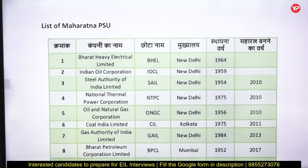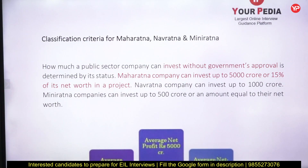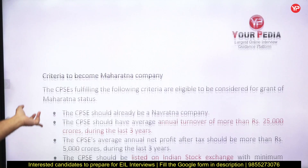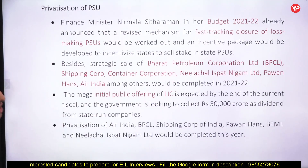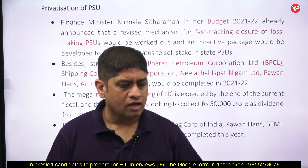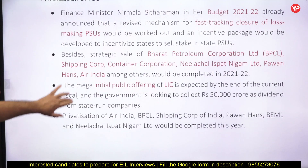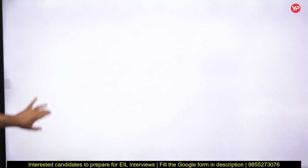When it comes to categorization of public sector companies, Maharatna is at the top. You should know what Maharatna companies exist and the criteria for classification into Maharatna, Navaratna, and Miniratna. EIL is a Navaratna company. For PSU interviews, one common question is about privatization — do you think PSUs should be privatized? The answer is: if it is profit-making, privatization should not be done; if loss-making, the government may disinvest.